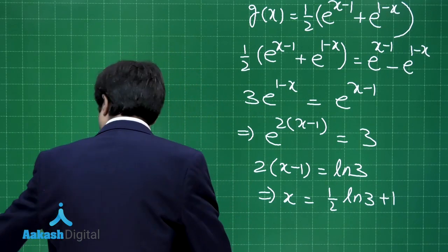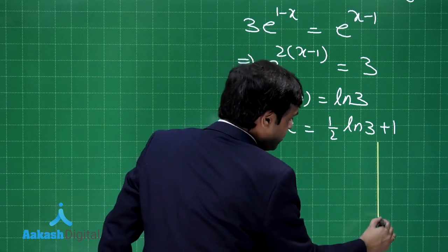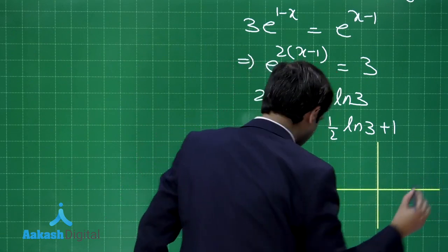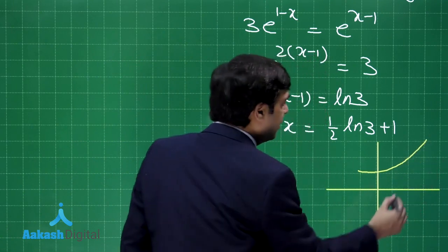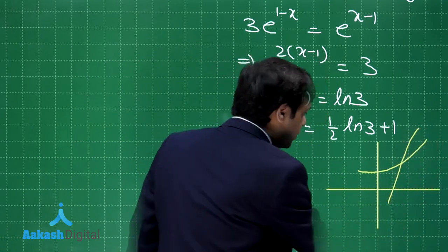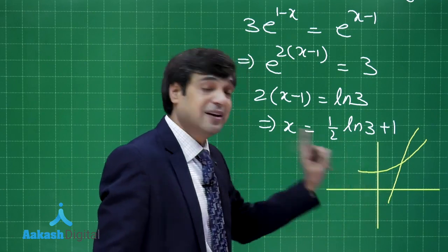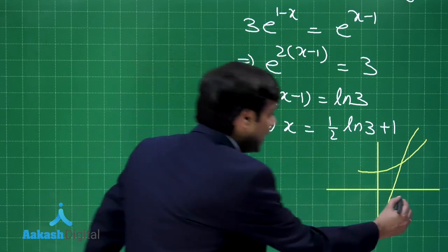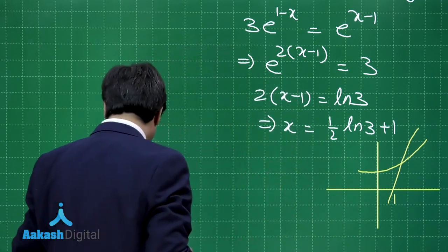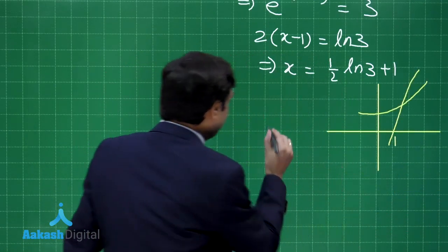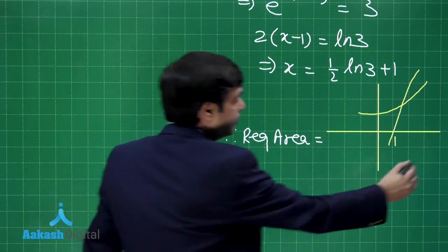Making a rough sketch: the two curves intersect at x = ½ log 3 + 1, and f(x) intersects the x-axis at x = 1. From the sketch we can clearly see the required region and which function lies above the other in each interval.